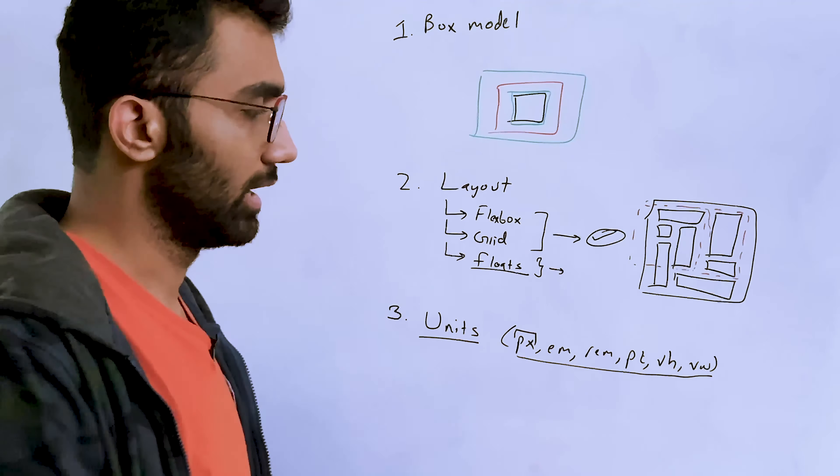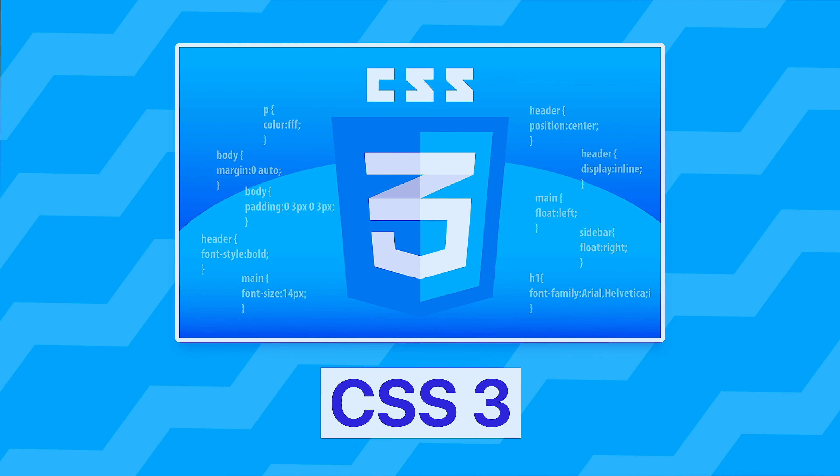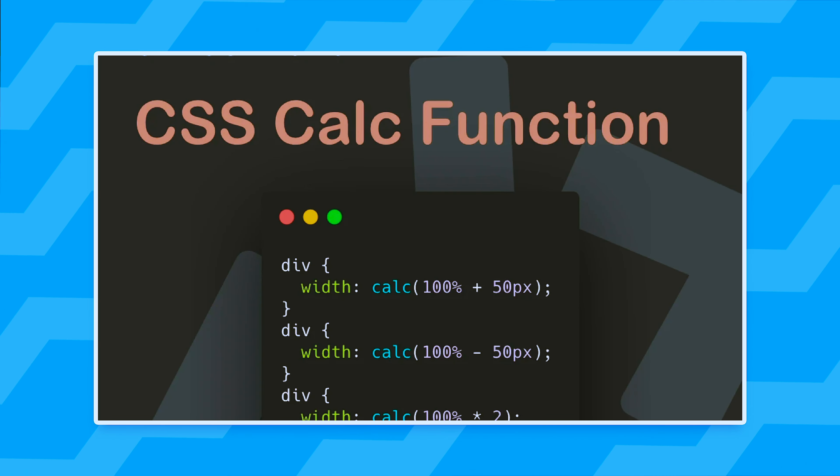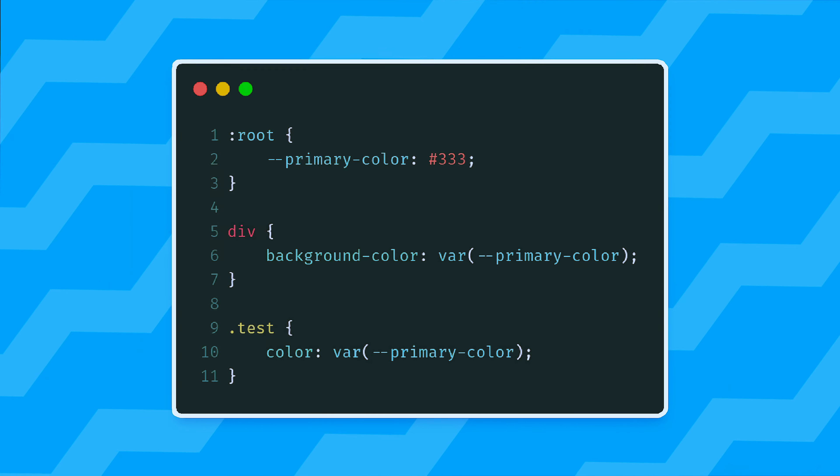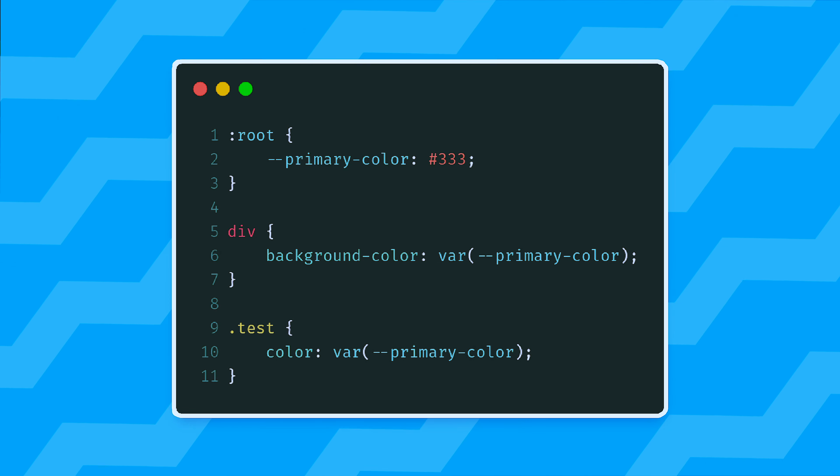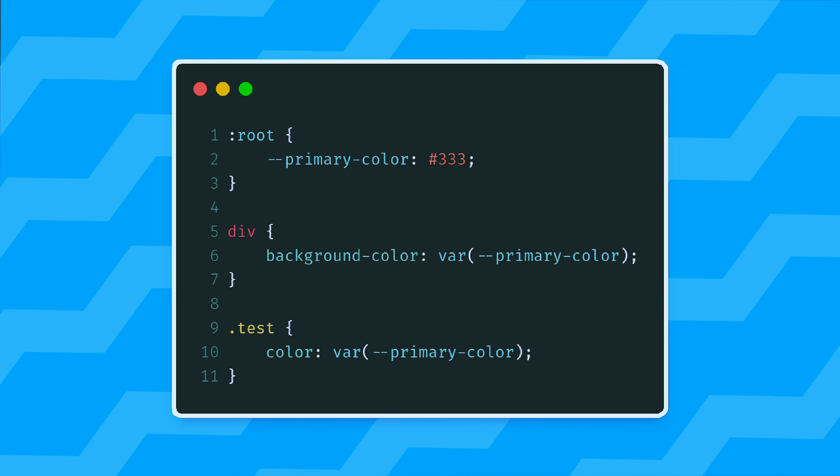After units, I'd recommend learning a bunch of CSS3 things — for example, the calc() function is super handy, CSS variables are very useful for reusability and keeping your codebase clean without using Sass. New units like vh and vw are also covered here. Knowing what CSS3 features — and beyond CSS3 — are available and usable in browsers right now is super important.